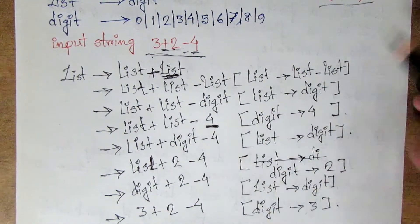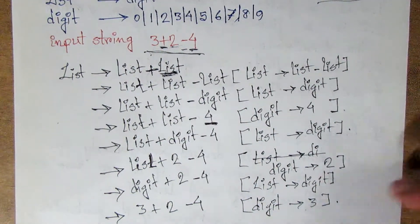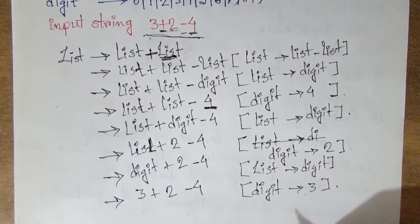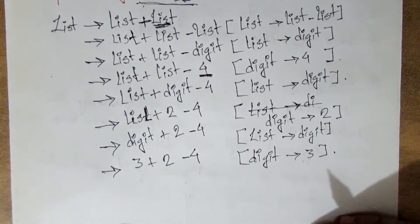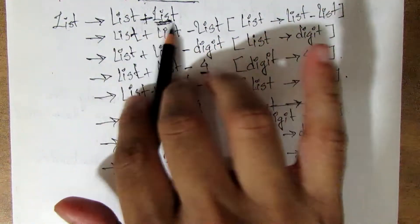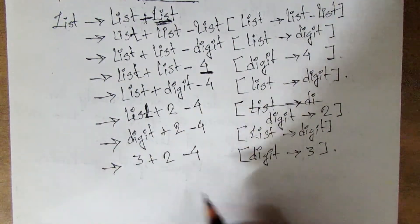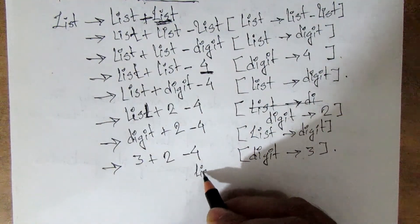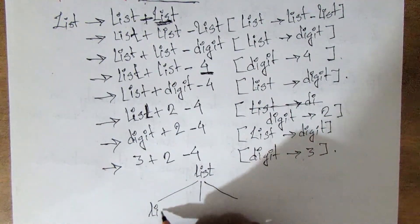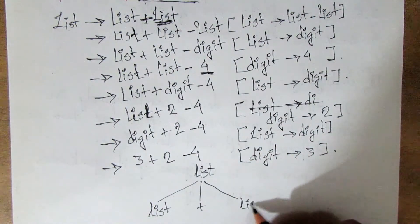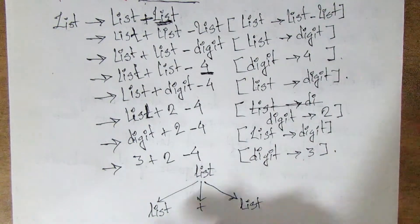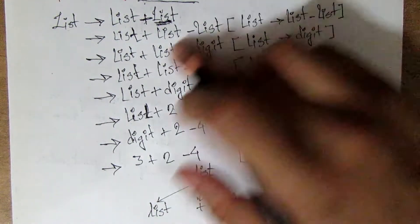Today we have the leftmost derivation, which is a bit complex. I'm going to see the rest of the form — further from the starting form. We can put list into list plus list, so list plus list.